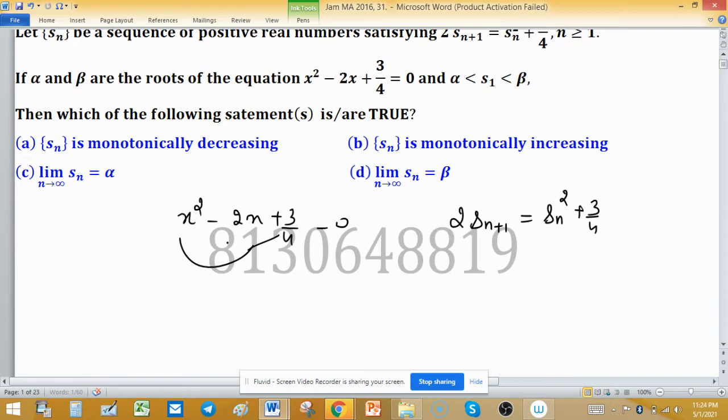As alpha and beta are the roots of this equation, it means that 4x square minus 8x plus 3 is equal to 0. To find the roots of this quadratic equation, we factorize it. So 2x minus 1 and 2x minus 3 are the factors of this equation and x equal to half and x equal to 3 by 2. These are the roots.